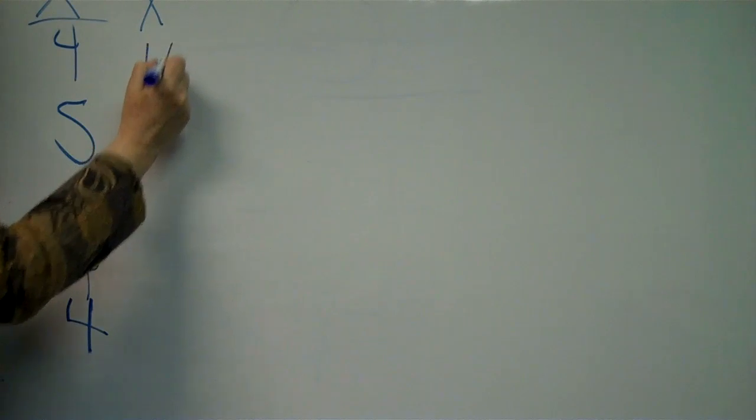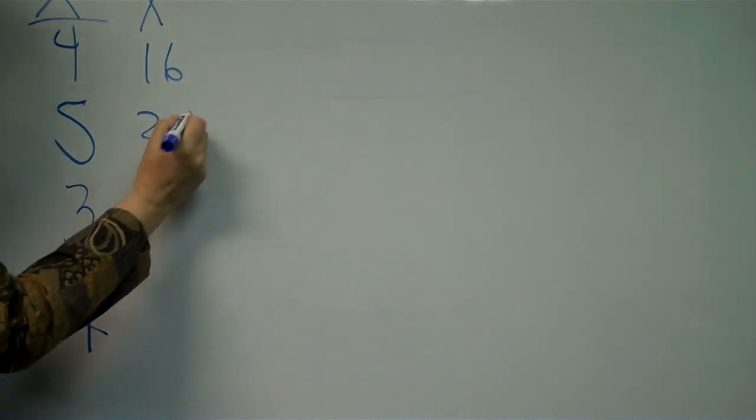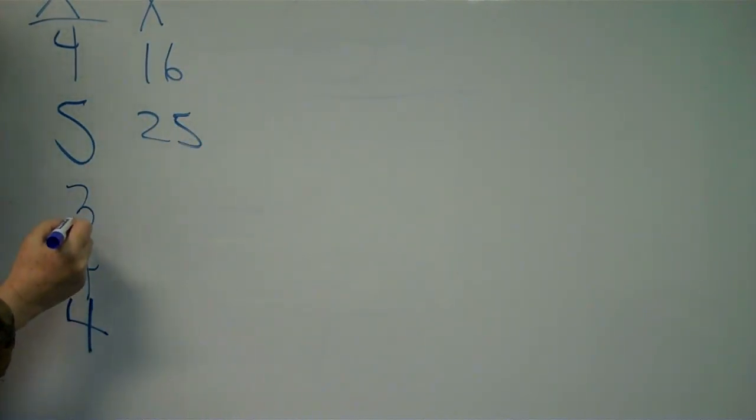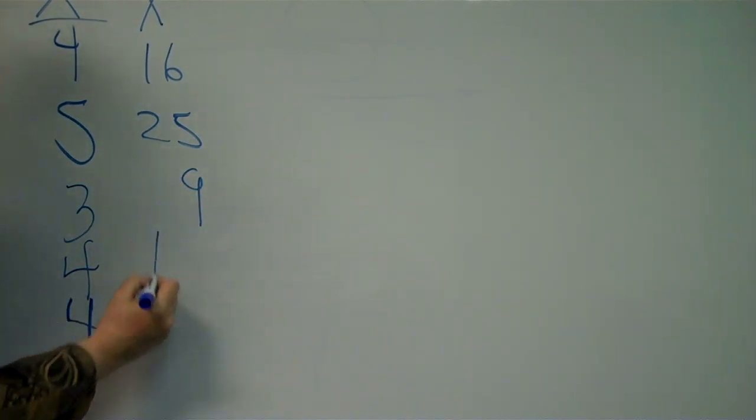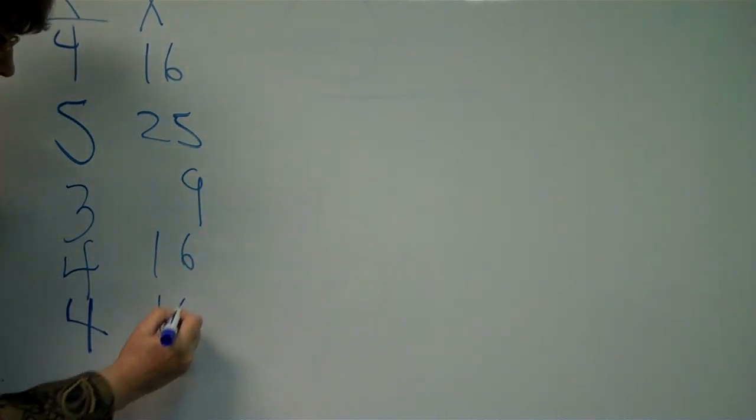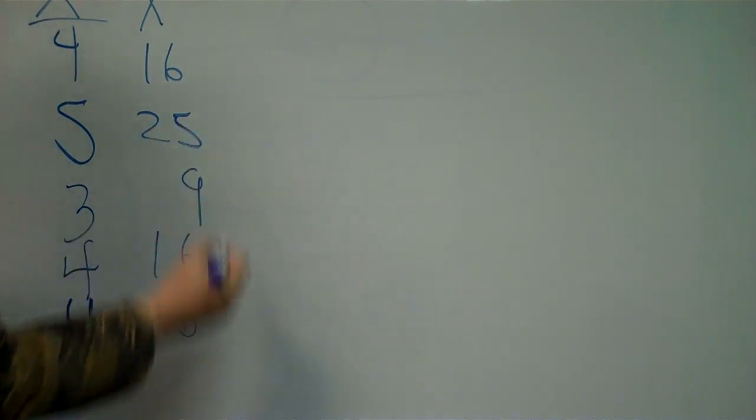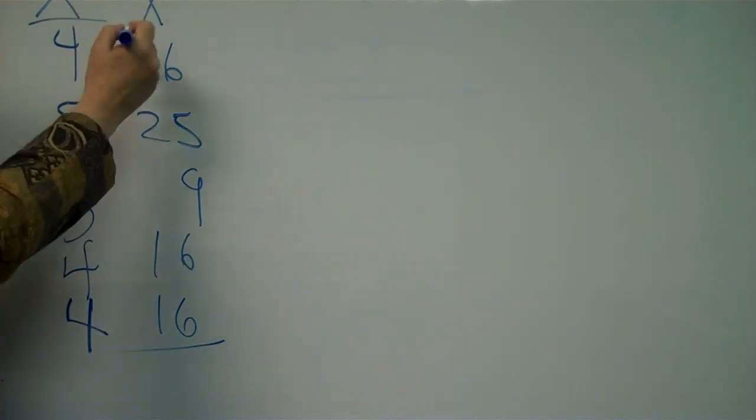4 squared is 16. 5 squared is 25. 3 squared is 9. 4 squared is 16. 4 squared is 16. So now I have to add up this column of numbers.